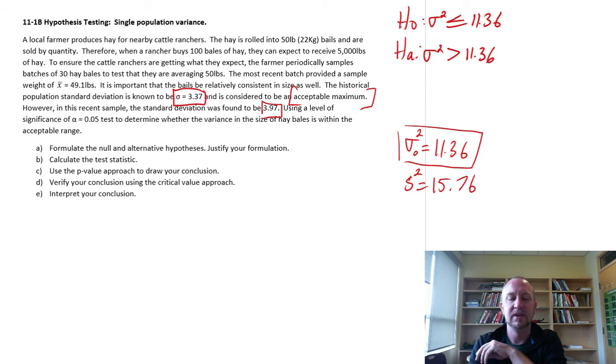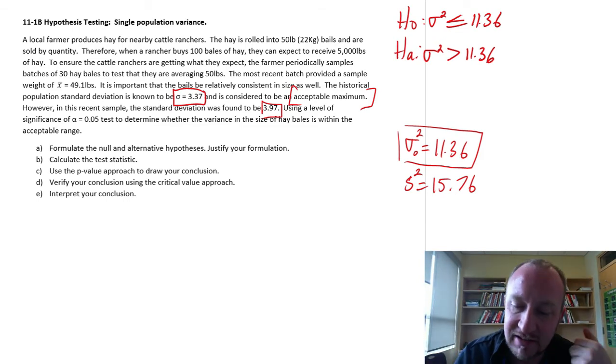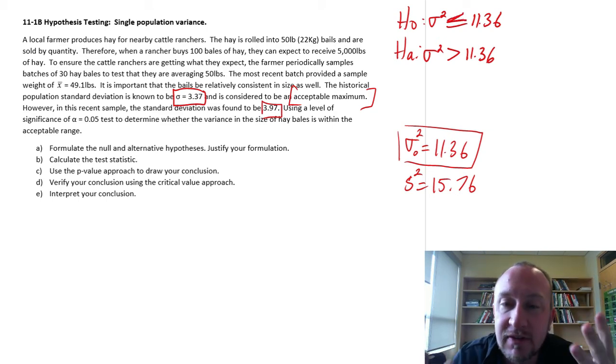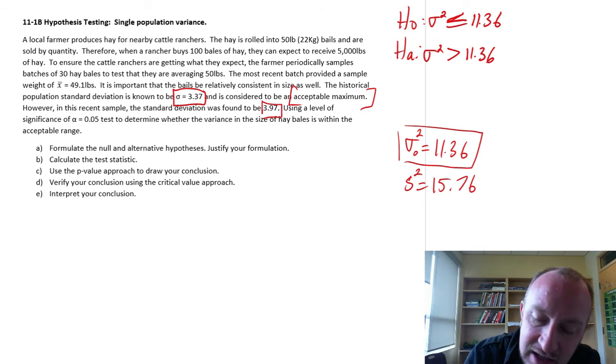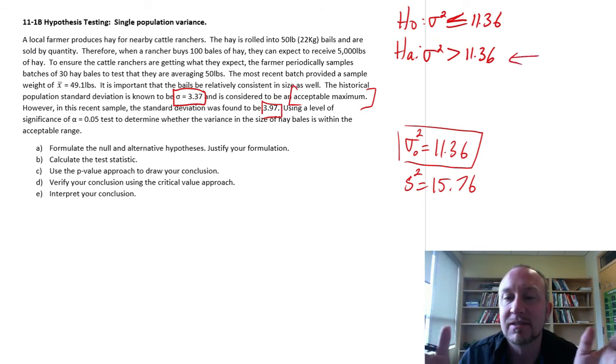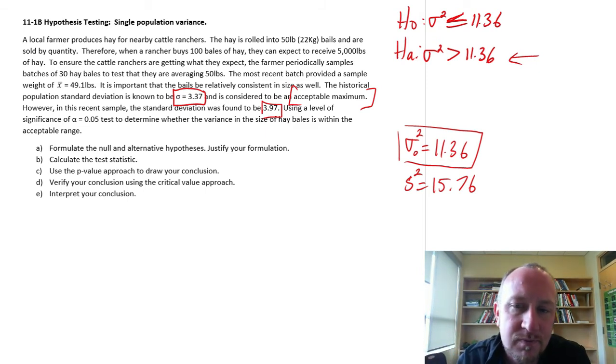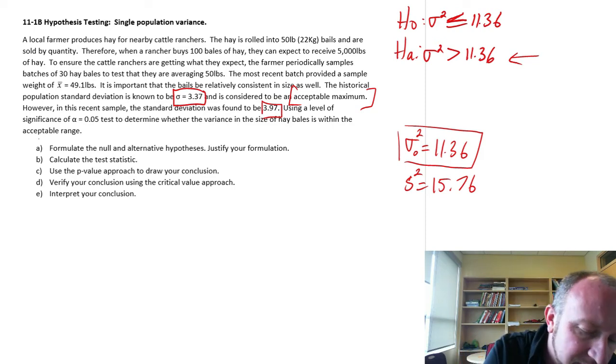So if we fail to reject the null hypothesis, then that means that we are no more than our maximum. The worst case scenario, we're 11.36, or we're less than 11.36. If the evidence supports the alternative hypothesis, well then that means that we are exceeding our maximum acceptable variance, and so probably you have to fix some problem, take some action. So we've got part A done.